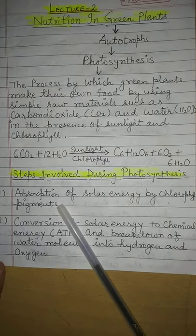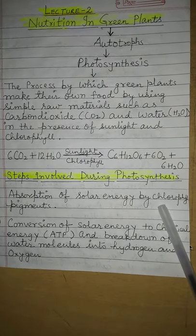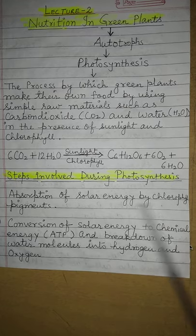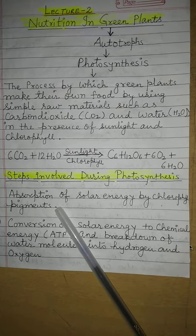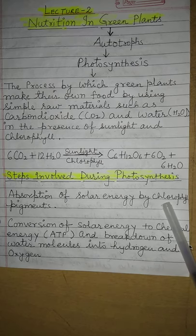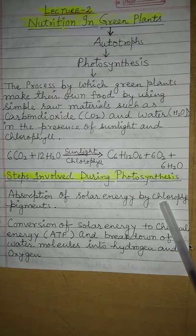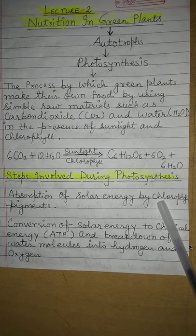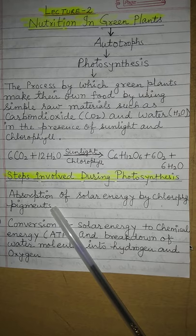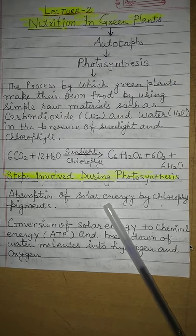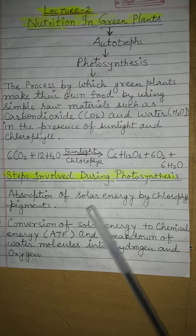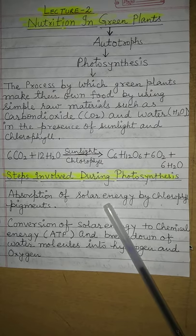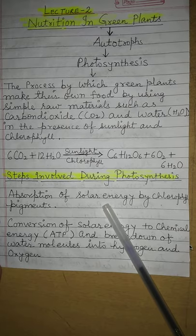Number one is absorption of solar energy by chlorophyll pigments. What are these chlorophyll pigments? Chlorophyll pigments are the green color pigments which are present in the green parts of the plants, specifically in green leaves. The chlorophyll pigment in green leaves has the ability to absorb sunlight, that is, solar energy. In the first step, chlorophyll pigments absorb the energy of sunlight.